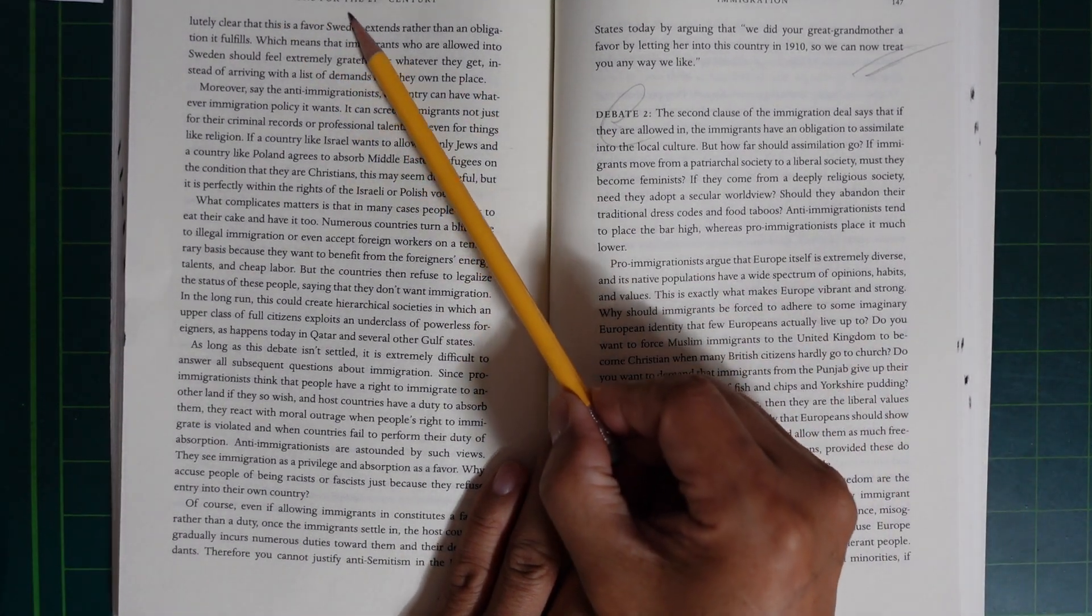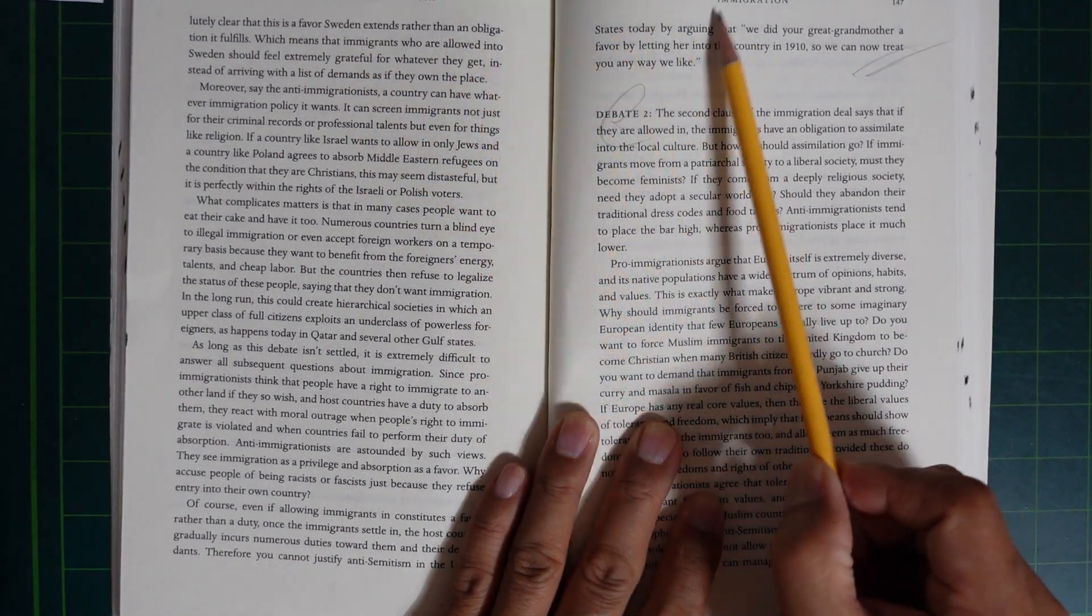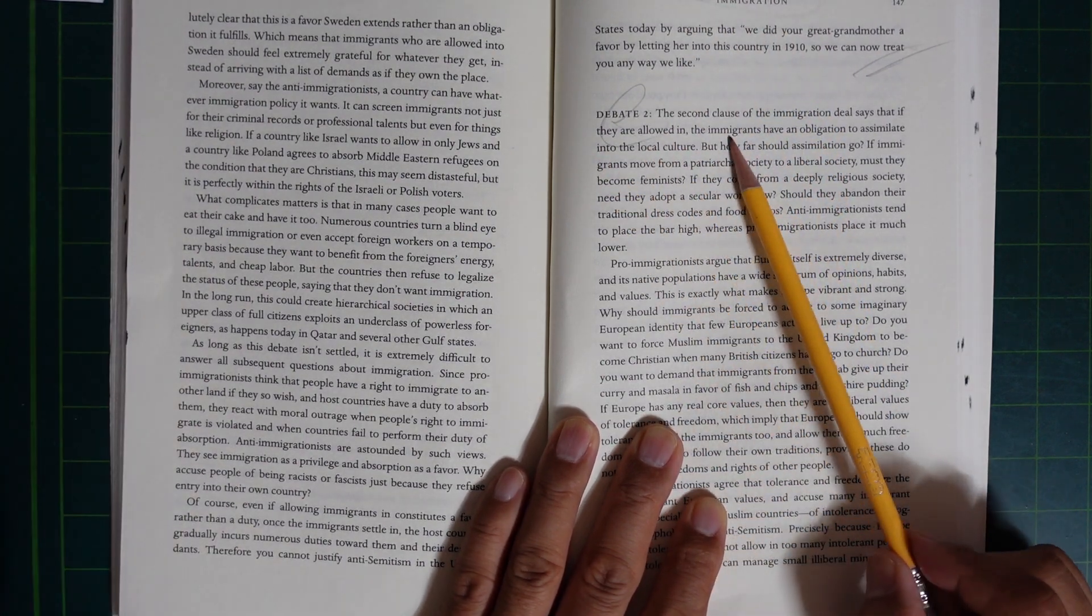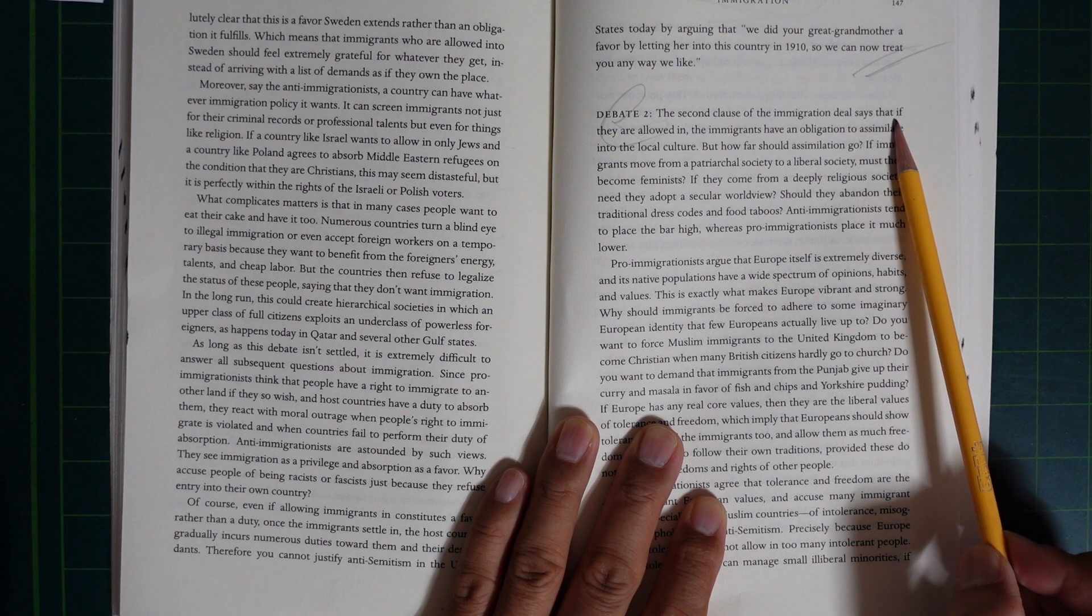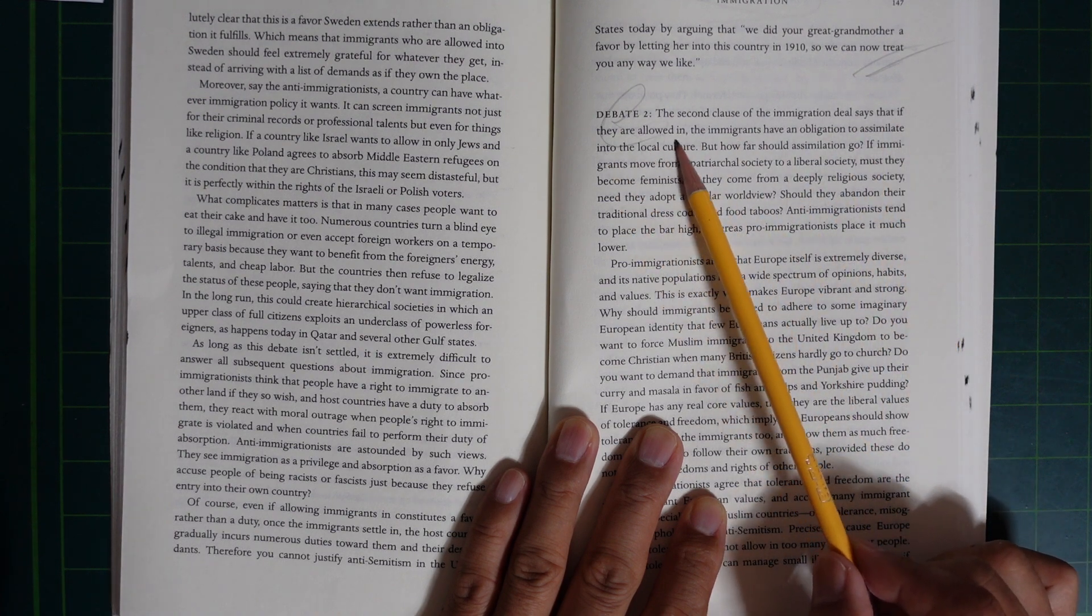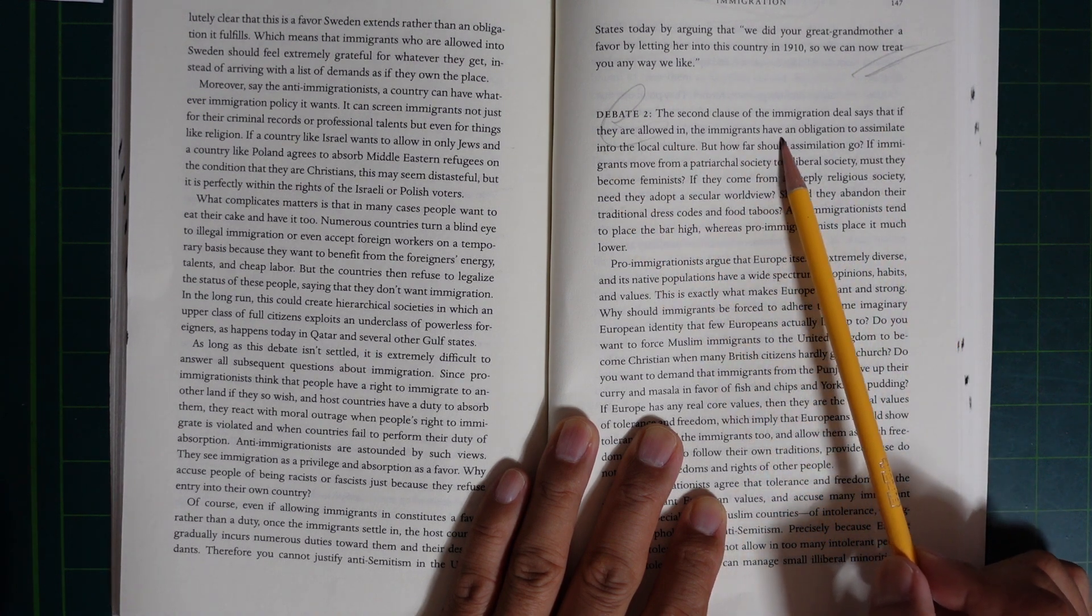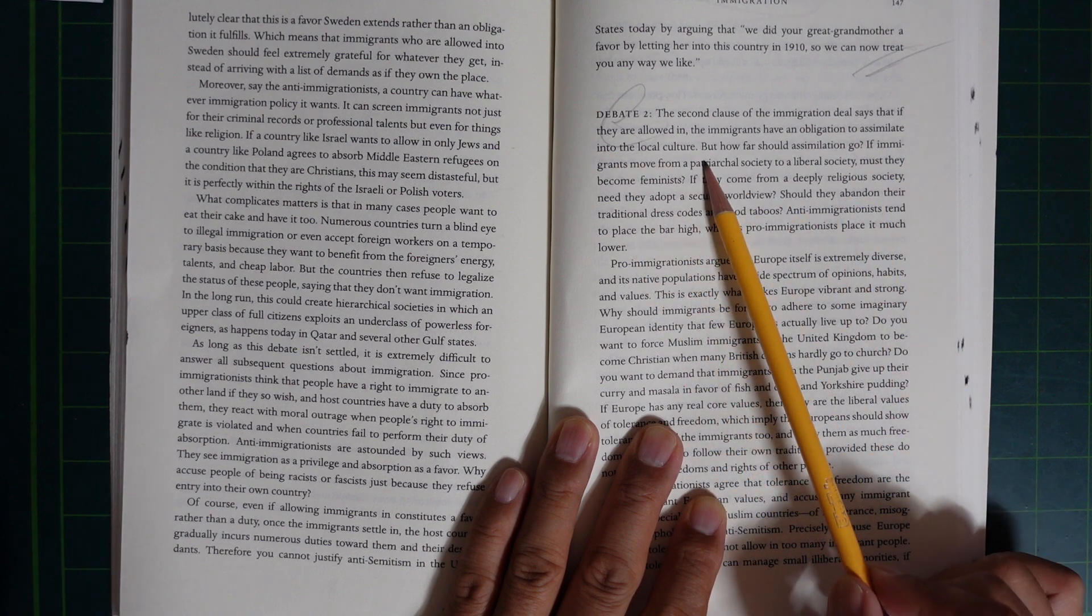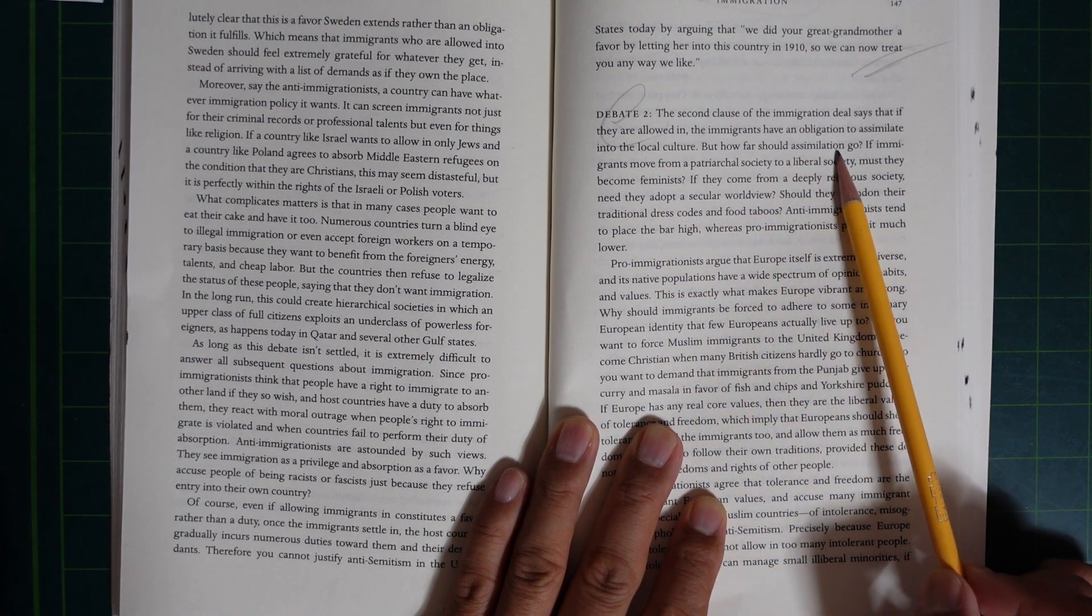The second clause of the immigration deal says that if they are allowed in, the immigrants have an obligation to assimilate into the local culture. But how far should assimilation go?